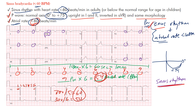So again, look for sinus rhythm, and look for an atrial rate — not ventricular rate — less than 60 beats per minute. If you have those two things, you have sinus bradycardia. This is an excellent example of sinus bradycardia, and hopefully that makes sense. That's the end of this lecture — I hope you learned something.